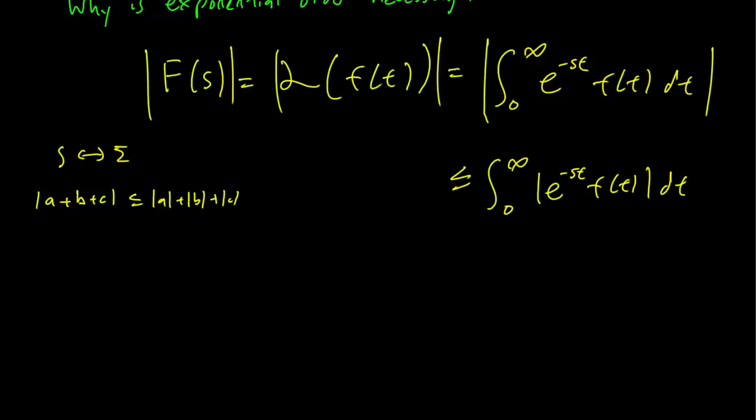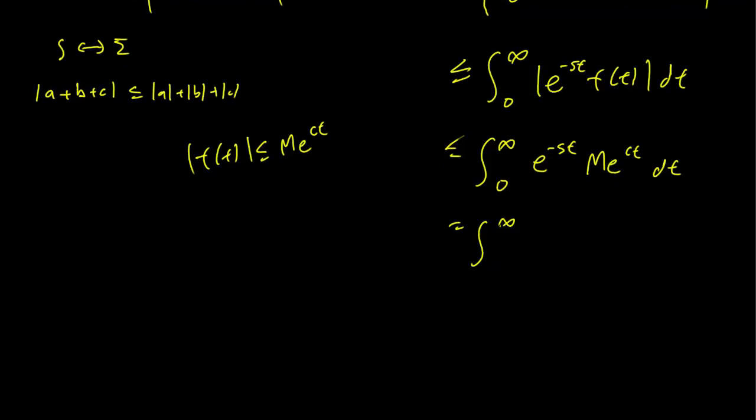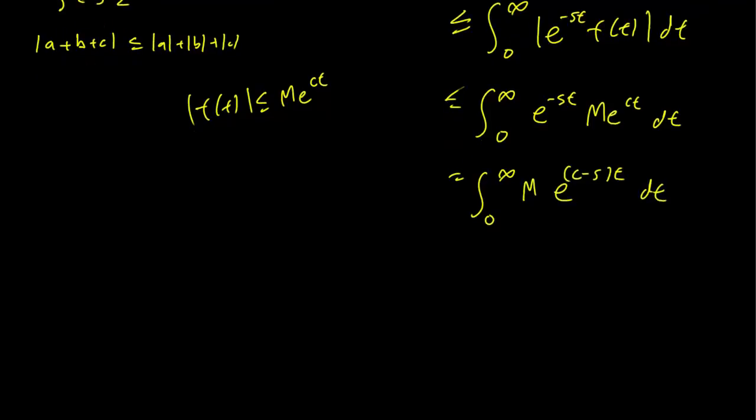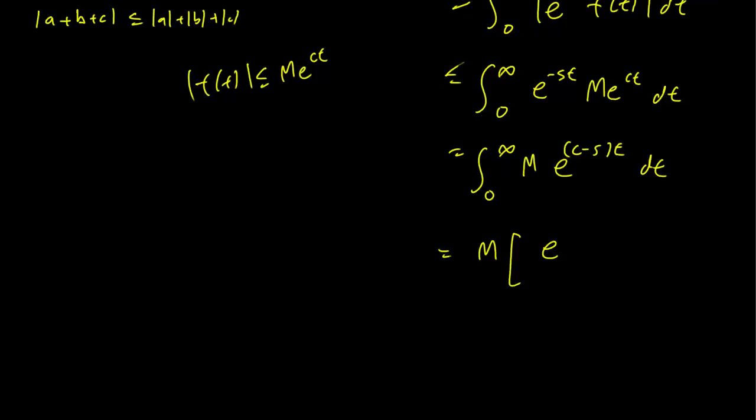We can remove the absolute values of course, because for one thing, e^(-st) is always positive. And we assume that the absolute value of F(t) is less than M e^(ct). This is going to be a fairly straightforward integration. And we just have the integral from 0 to infinity of M e^((c-s)t) dt.